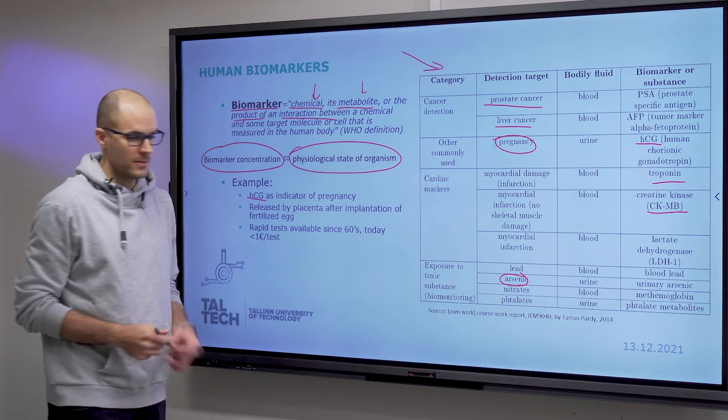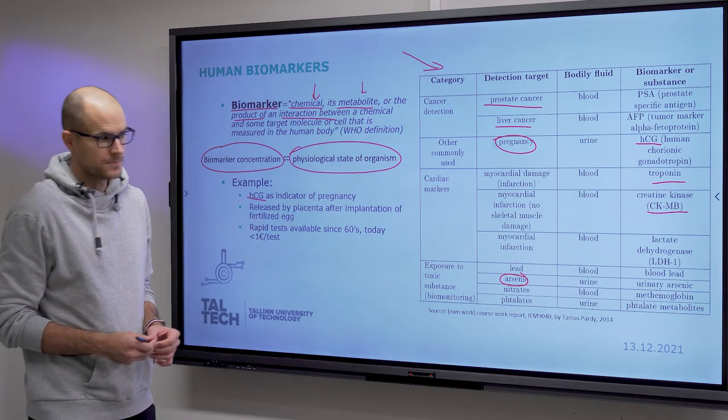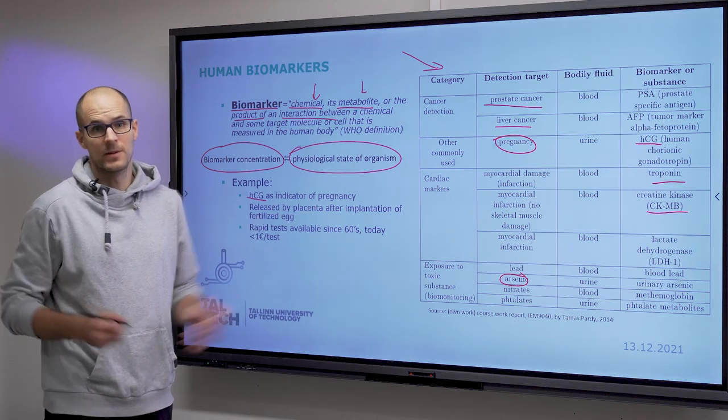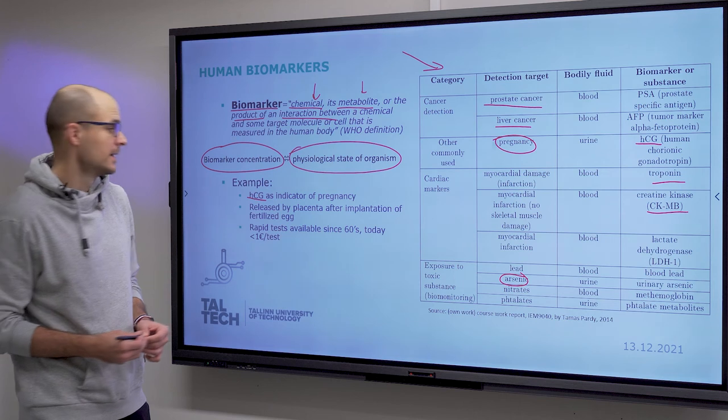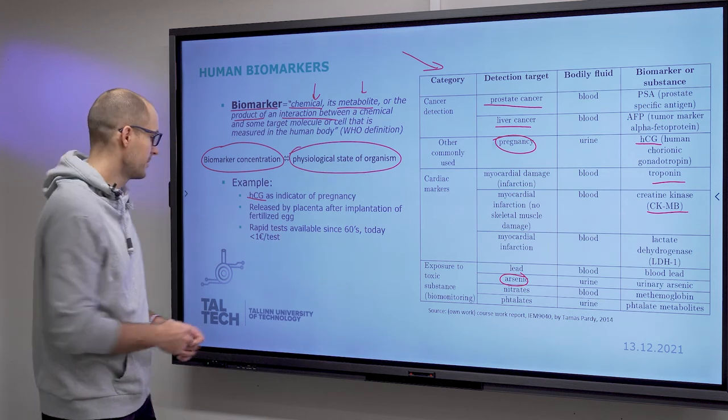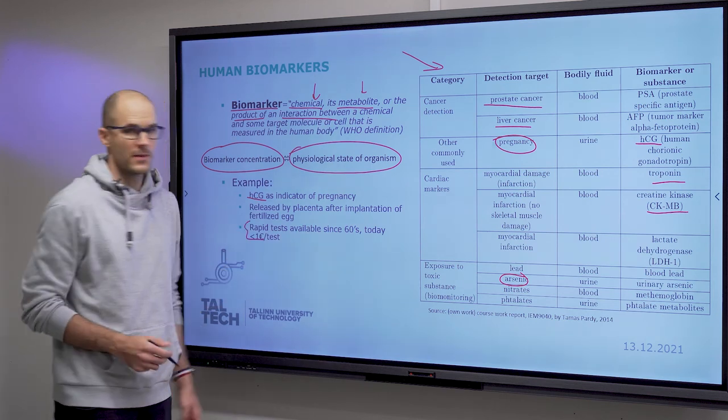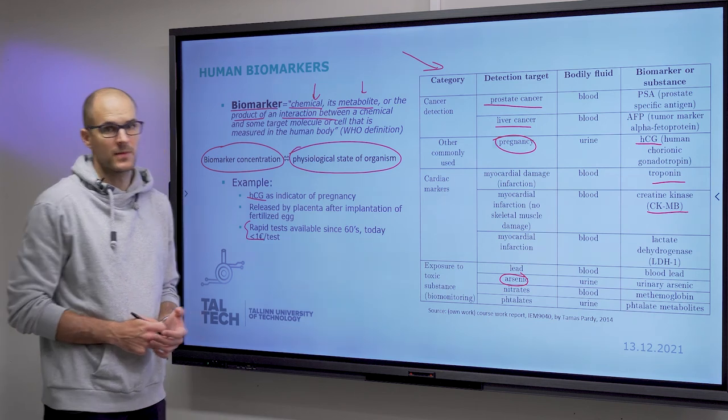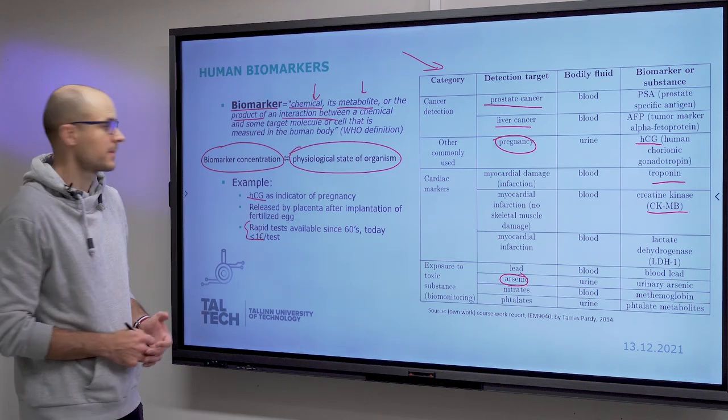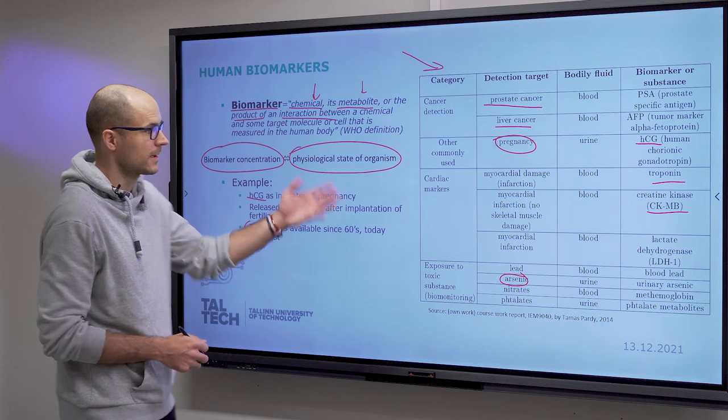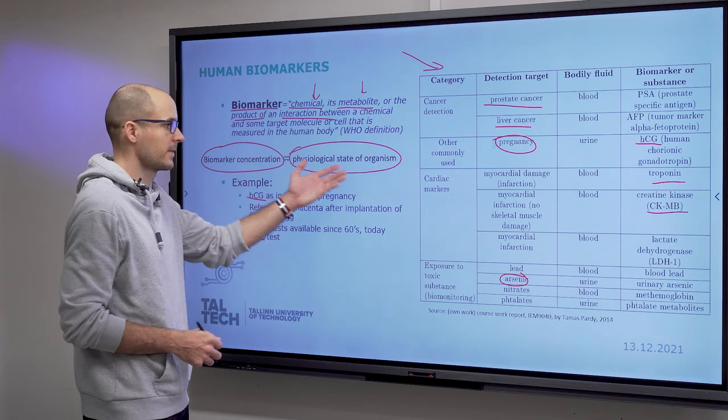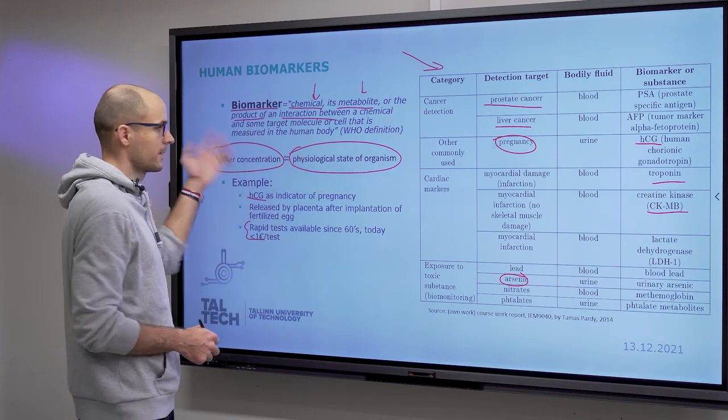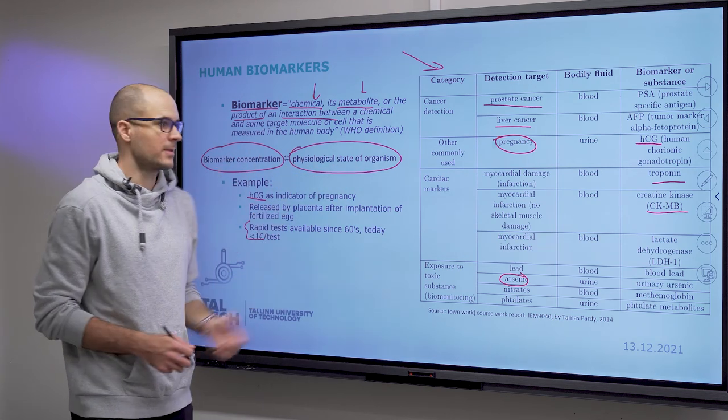But pregnancy tests are good examples because everyone knows them, everyone has seen them. They are really easily accessible, and because of mass production they are extremely cheap nowadays. You can get test strips for one euro or even less. And yeah, it indicates a physiological process, and the concentration of hCG characterizes the progress or the status of pregnancy—which week it is in.